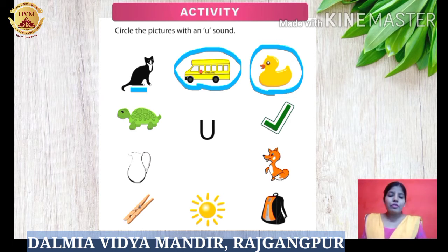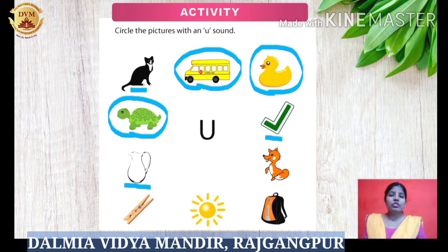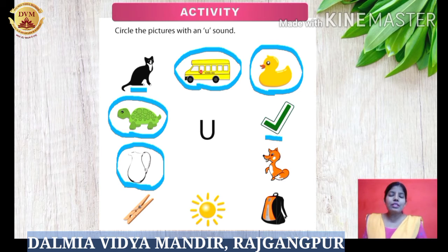Then the next picture is of a turtle. The spelling of turtle is T U R T L E – it has U sound, so we will circle the picture of turtle. Then here we have a tick mark – does it have U sound? Tick – no. So we will not circle this picture. Next picture is of a jug. The spelling of jug is J U G – it has U sound, so we will circle this picture of jug.